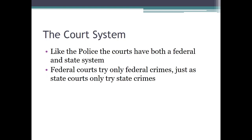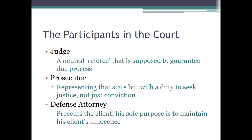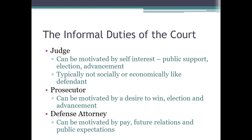The court system, like the police, has both a federal and a state system. Federal courts try only federal crimes, just as state courts try only state crimes. Who are the participants? We've got the judge, the prosecutor, and the defense attorney — the good guy, I would call him, but that's just because I was one. The judge is supposedly a neutral referee. The prosecutor represents the state but has a duty to seek justice. The defense attorney's real sole purpose is to protect his client's rights — not prove innocence, because as we know, you've got a presumption of innocence. Informally, judges can be motivated by self-interest: public support, re-election, career advancement. And they typically come from different social and economic classes than defendants.